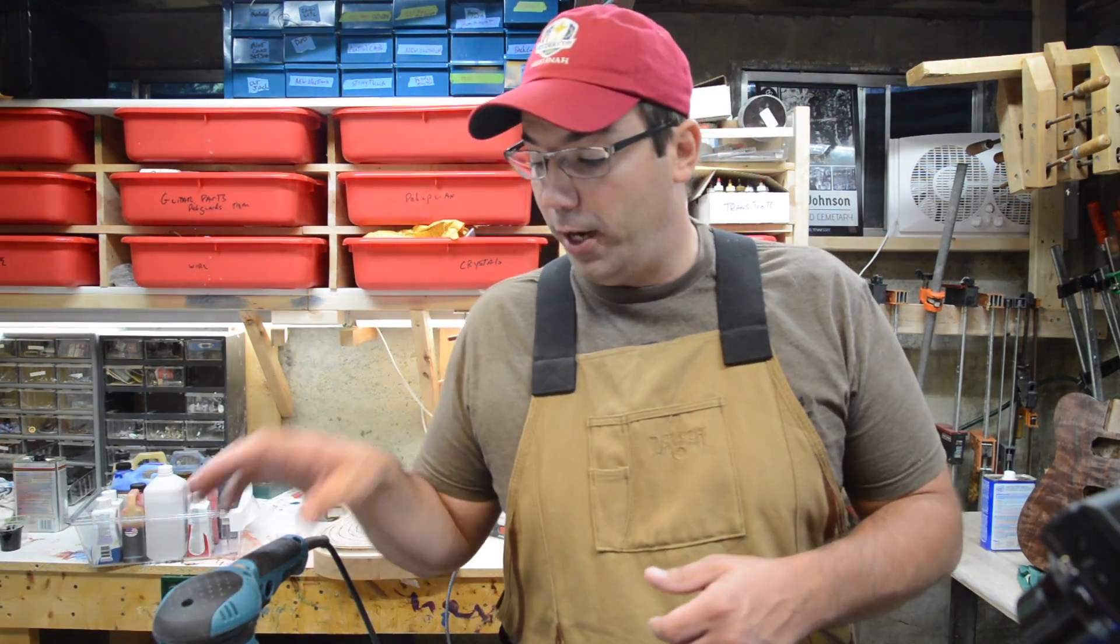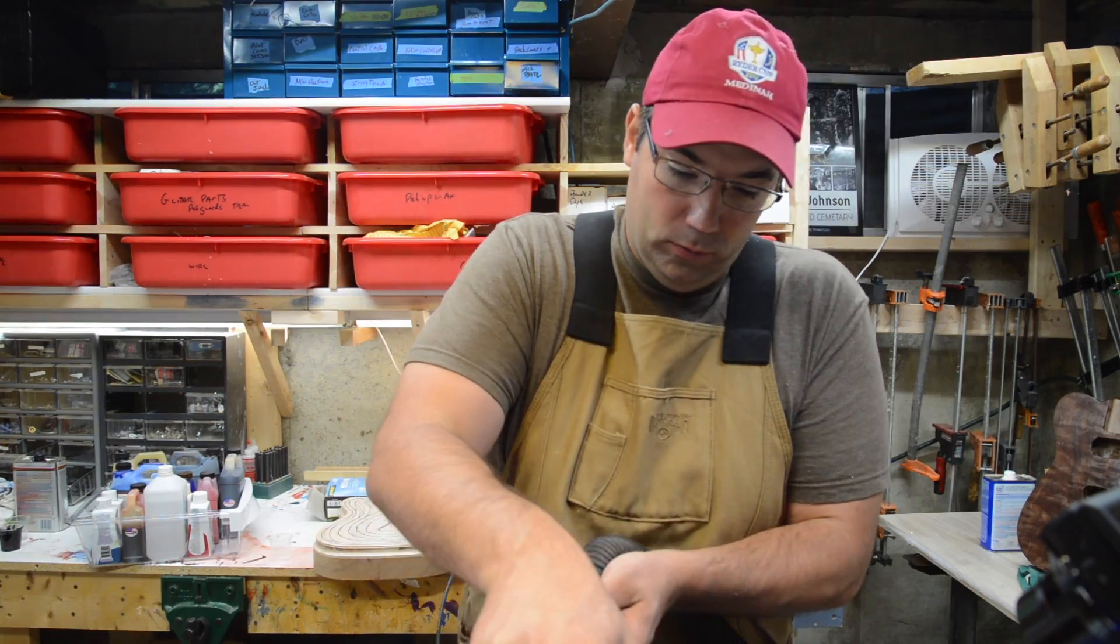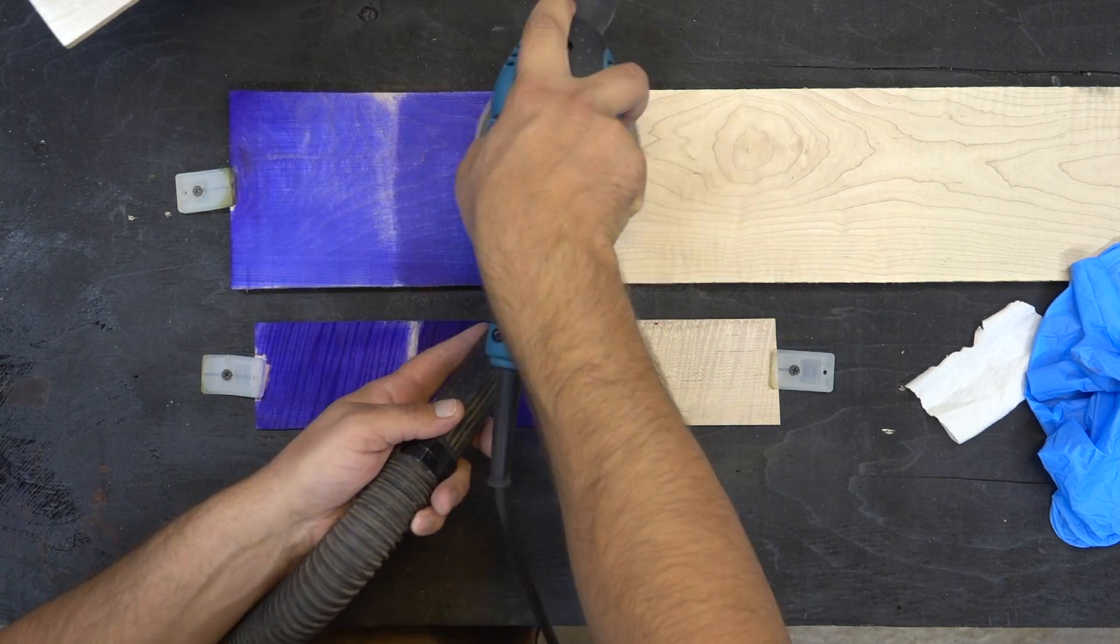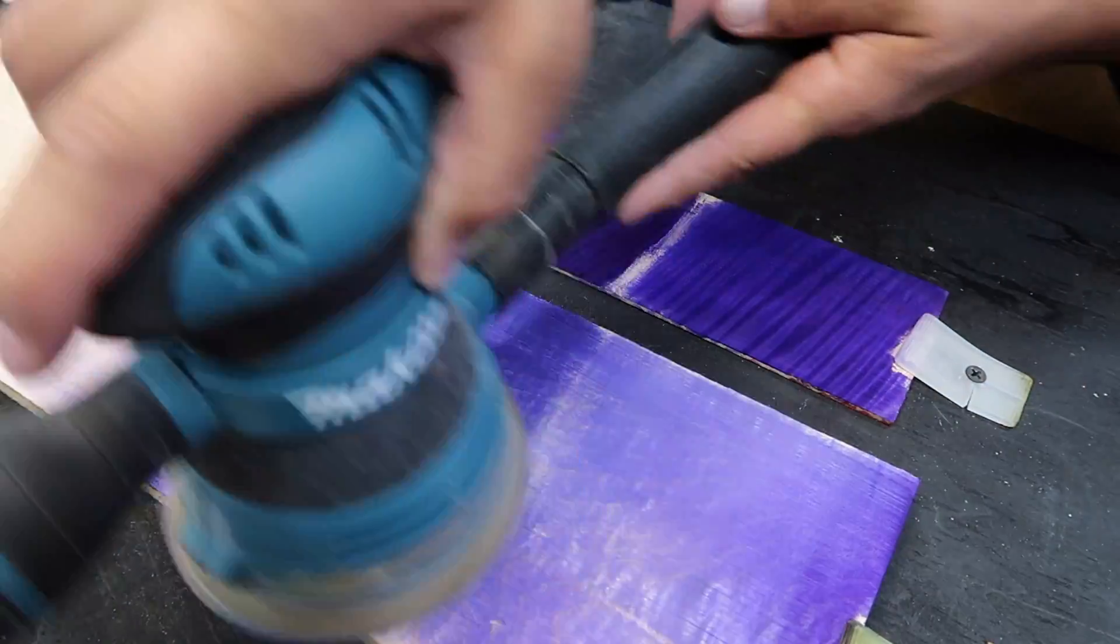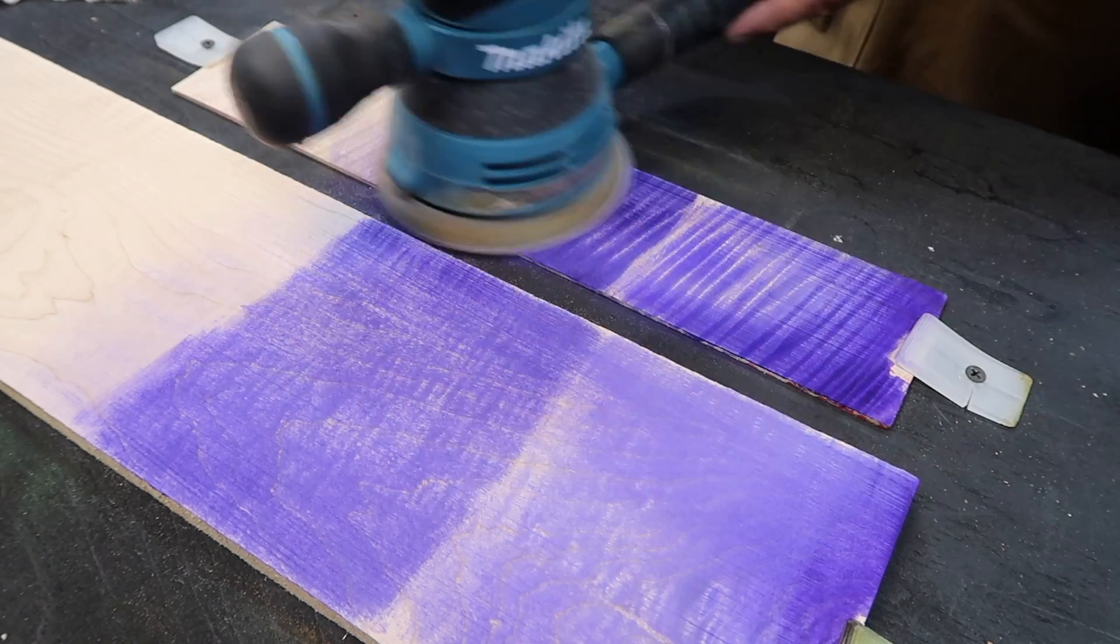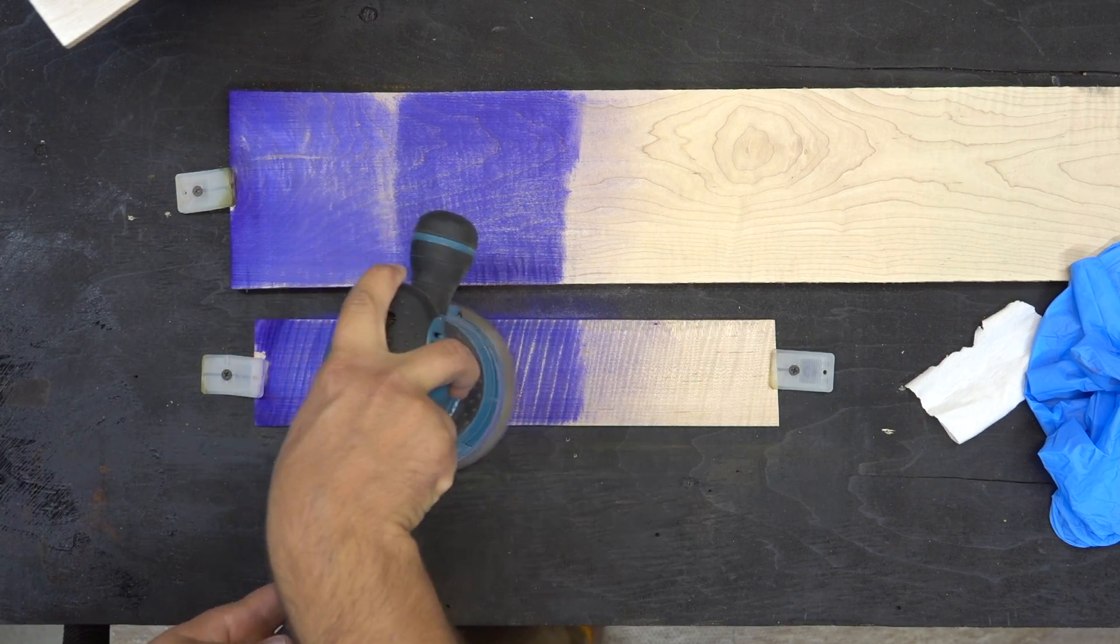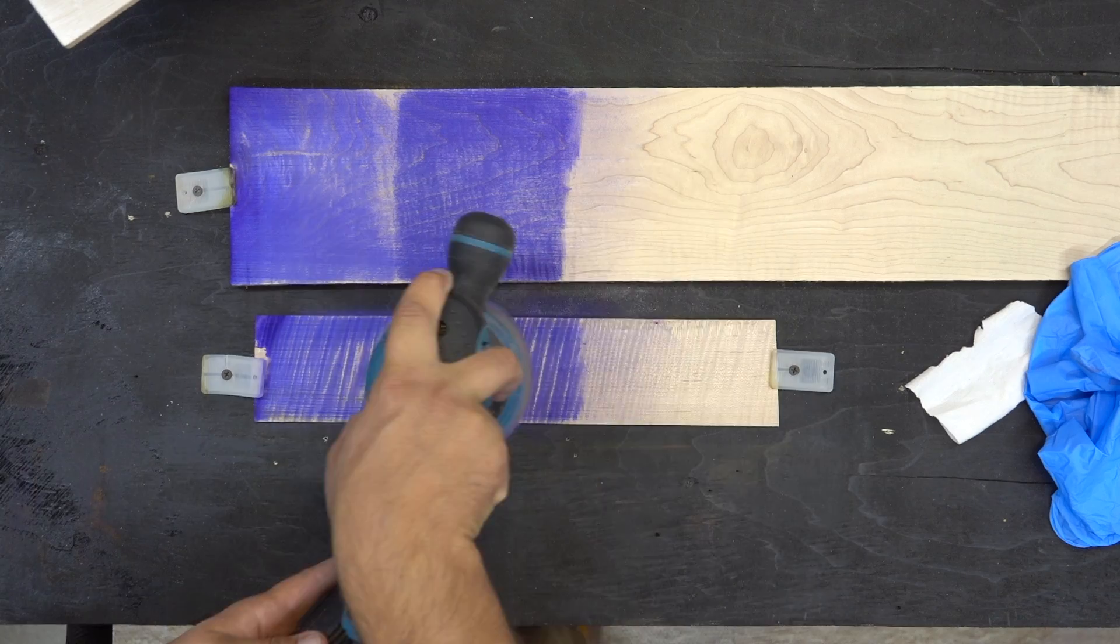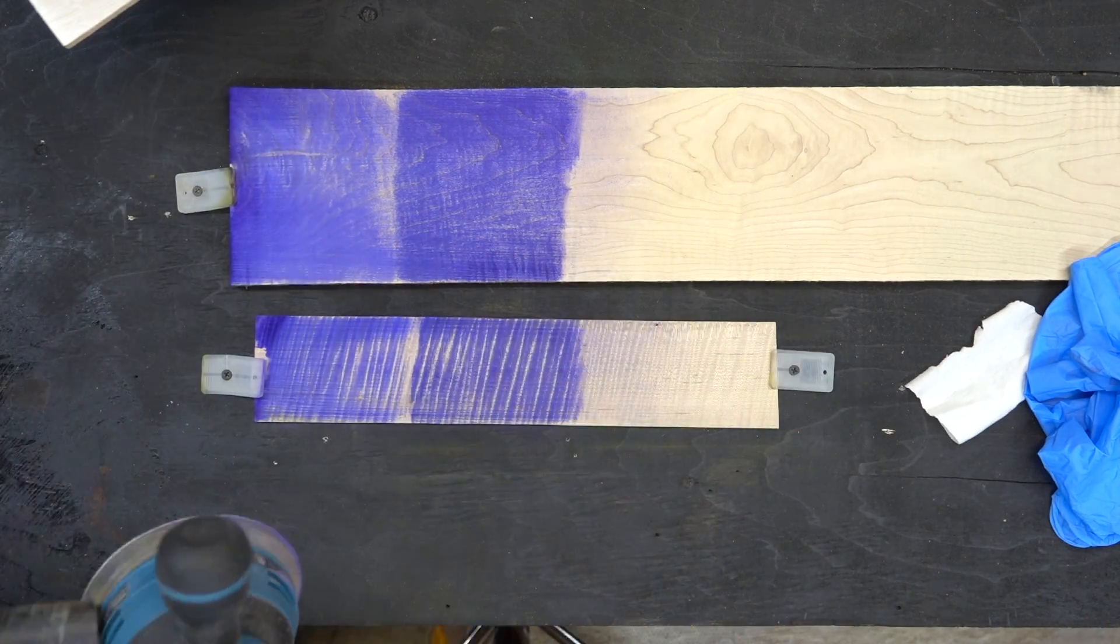So for this, we're going to grab the sander here with some 240 grit, we're going to sand this down, and I'll show you how it looks.